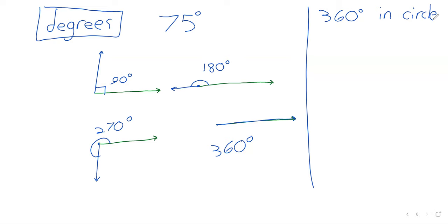So if our initial and terminal side are the same, and we start here, we go all the way around, we wind up back, and there's a circle — hence that phrase. In this picture, all of the angles were positive.